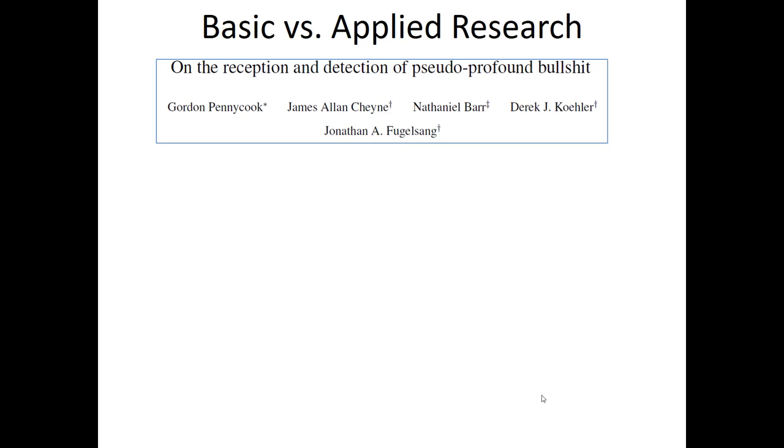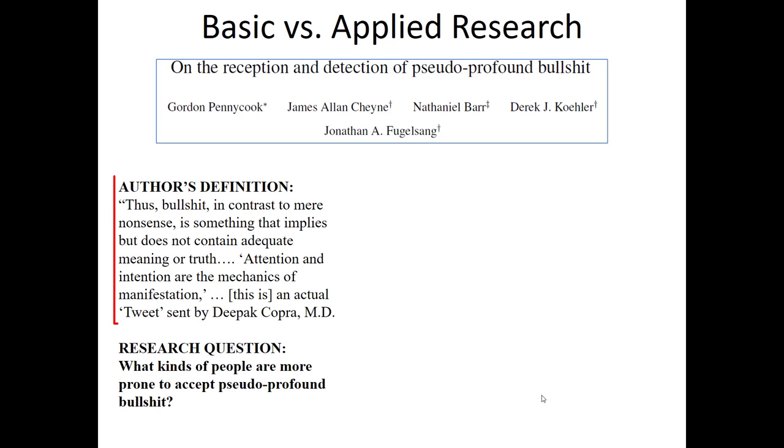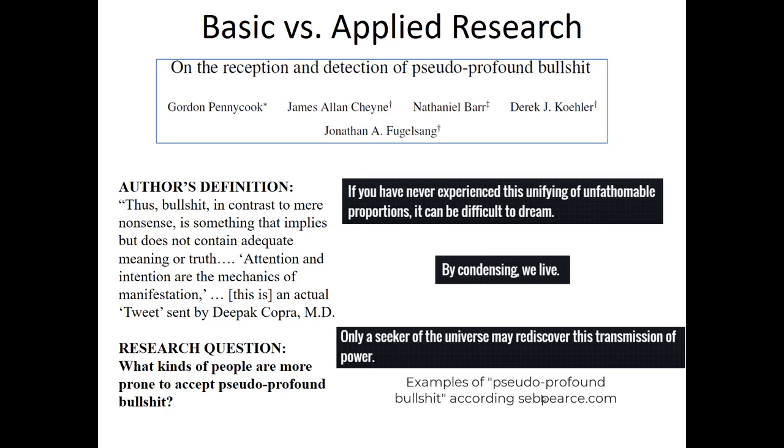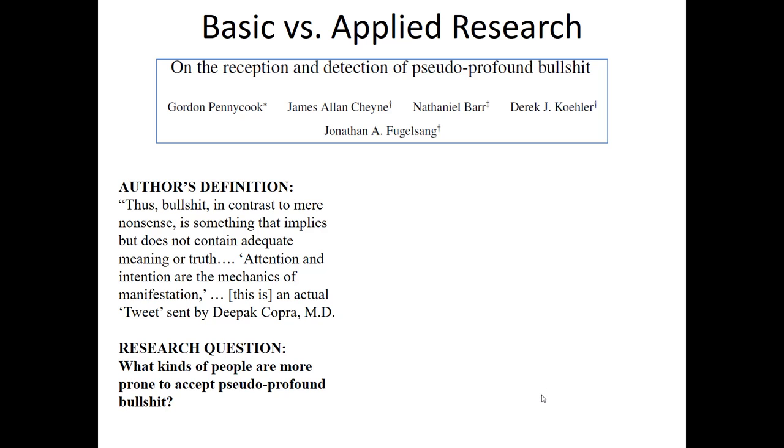Here's another example. An article was published called On the Reception and Detection of Pseudo-Profound Bullshit. This is a real article, by the way, from a peer-reviewed journal. In this article, they defined bullshit in an academic sense. They said bullshit, in contrast to mere nonsense, is something that implies but does not contain adequate meaning or truth. As an example, attention and intention are the mechanics of manifestation. Essentially, the author's definition tried to argue that bullshit claims are those kind of things where they are technically sentences and they have content, but they mean something so wide and so diverse and so broad and so idiosyncratic to every person reading it, it doesn't really have any concrete meaning. In this study, what they tried to do was they tried to figure out what kinds of people are more prone to accept pseudo-profound bullshit. In other words, what type of personality traits predict the type of people who are more likely to find pseudo-profound bullshit to have meaning versus those types of people who are less likely to think it has deep meaning.